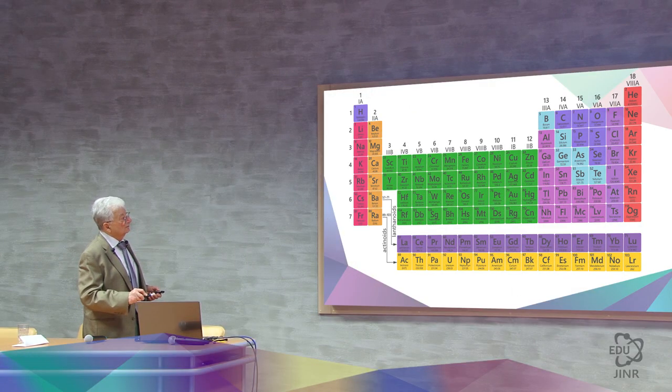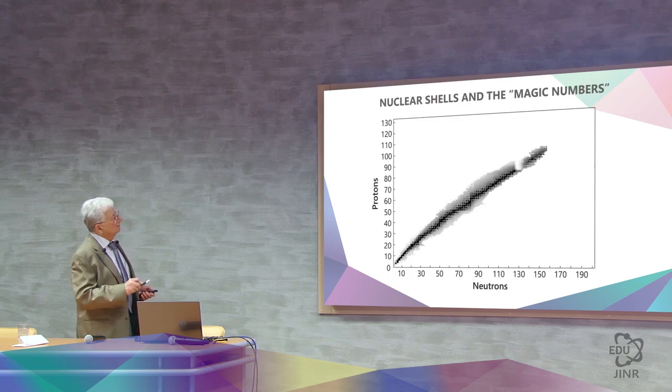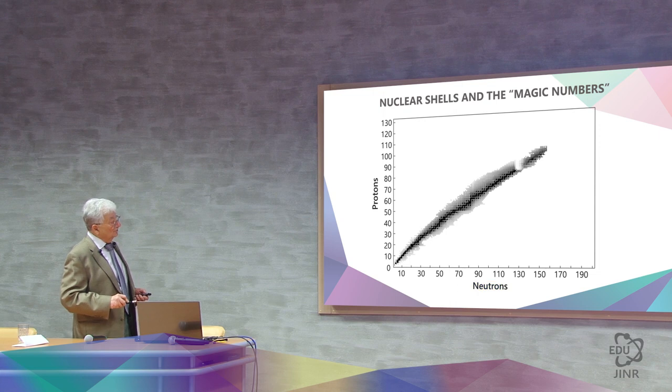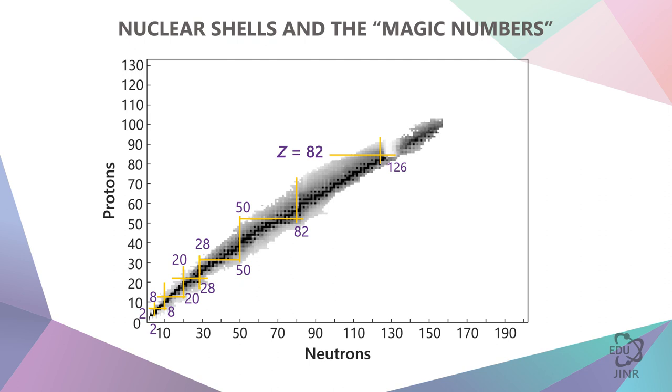Looking at this famous graph of all the nuclei, we can see the protons and neutrons. These are the magic numbers. For protons they are 2 protons, 8 protons, 20 protons, 28 protons, 50 protons and 82 protons. For neutrons they are also 2, 8, 20, 28, 50, 82 and 126.